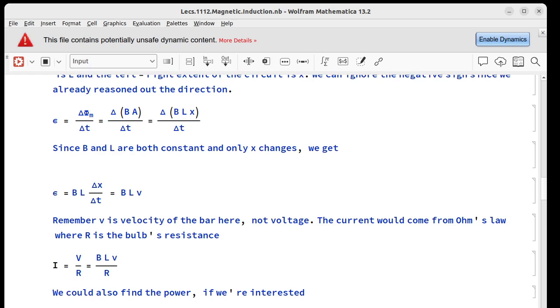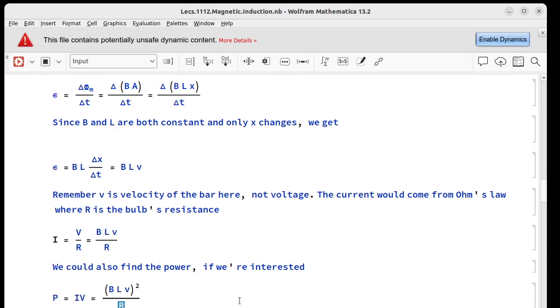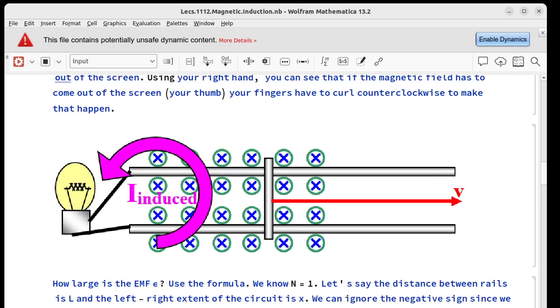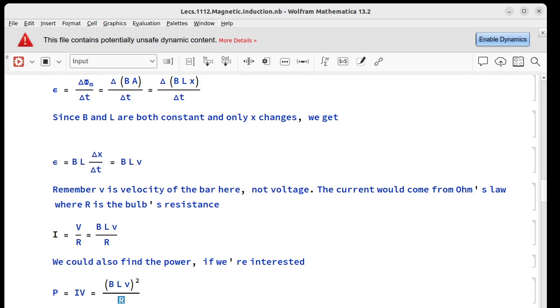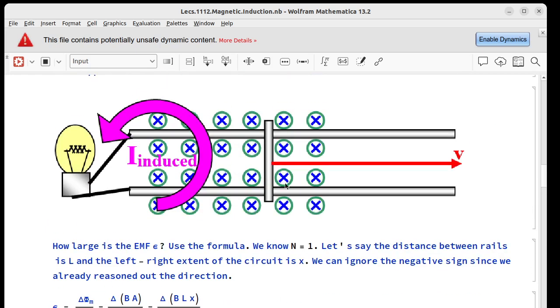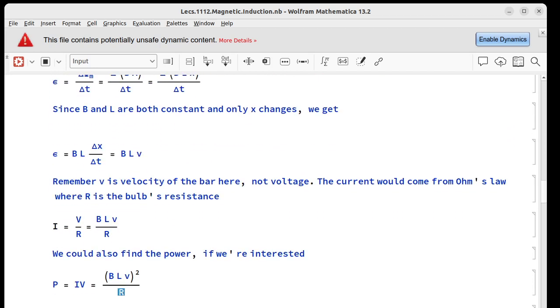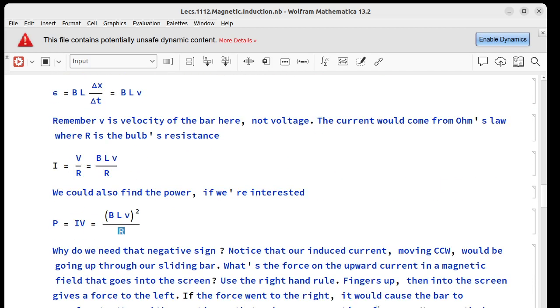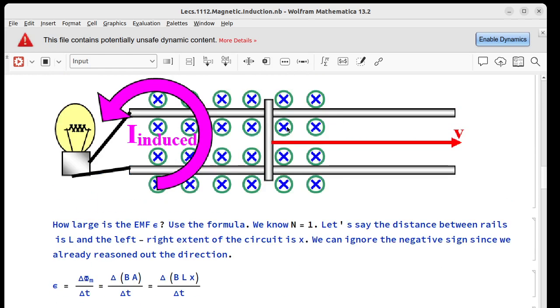Now, why did we need the negative sign in this explanation? I mean, we reasoned it away, but it was still there. Why do we have it? The reason is our induced current, which is moving counterclockwise, is moving up through this bar. If it goes around like that, it's got to be moving up the page through that bar. So it's carrying a current and we want to know what's the force on that current.